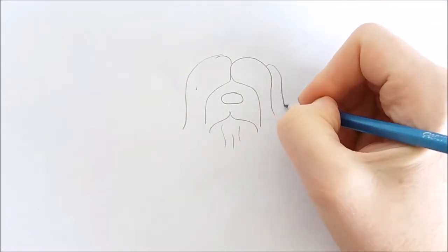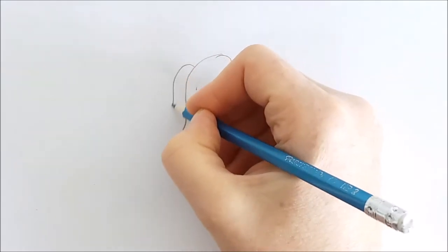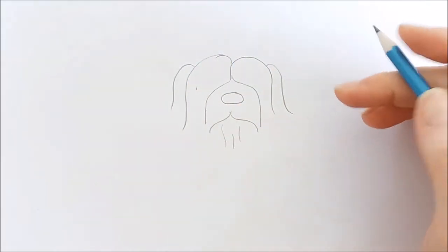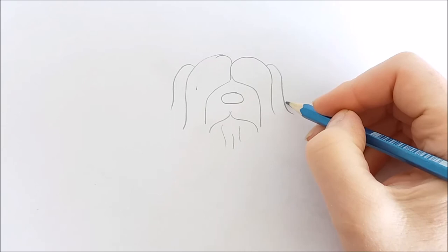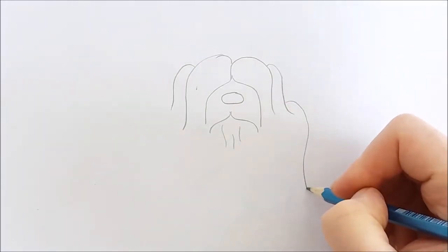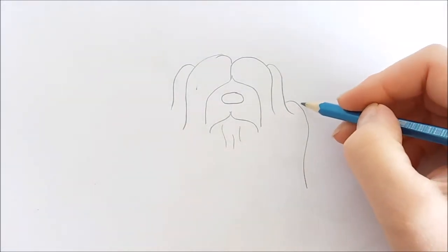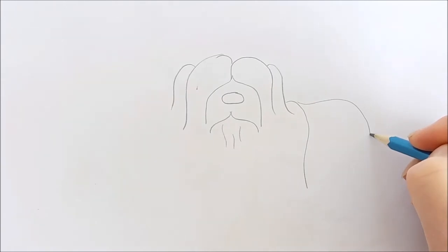Now I'll just draw a couple lines down for the ears and then we'll draw the back which is just a line that goes curving down and then from that line we'll draw another line that goes straight out and curves.